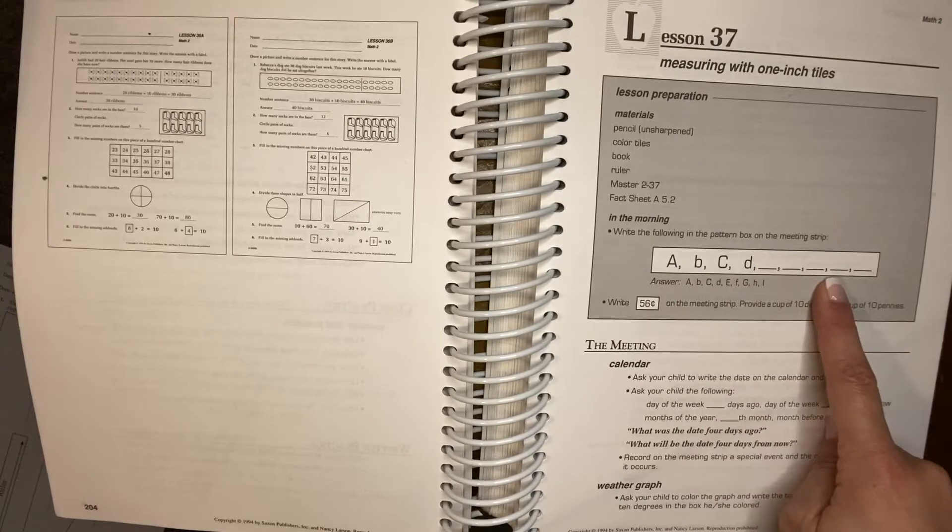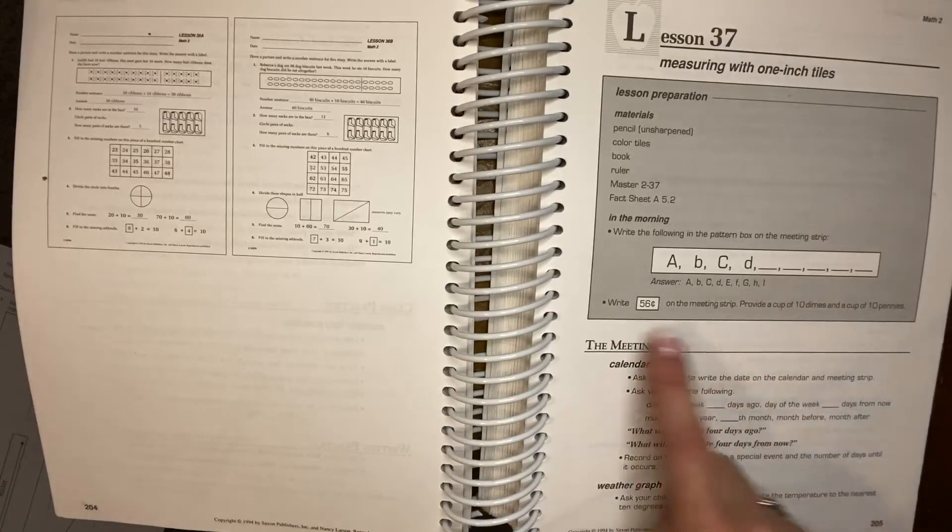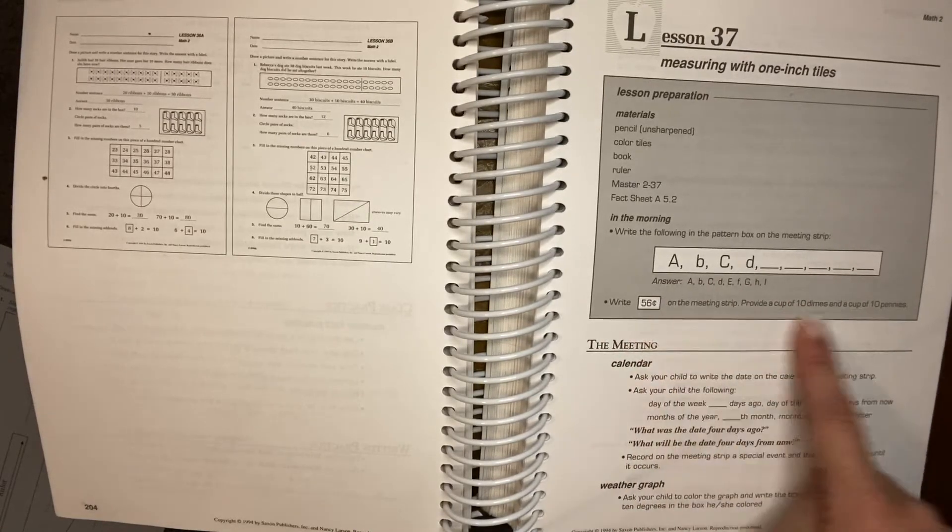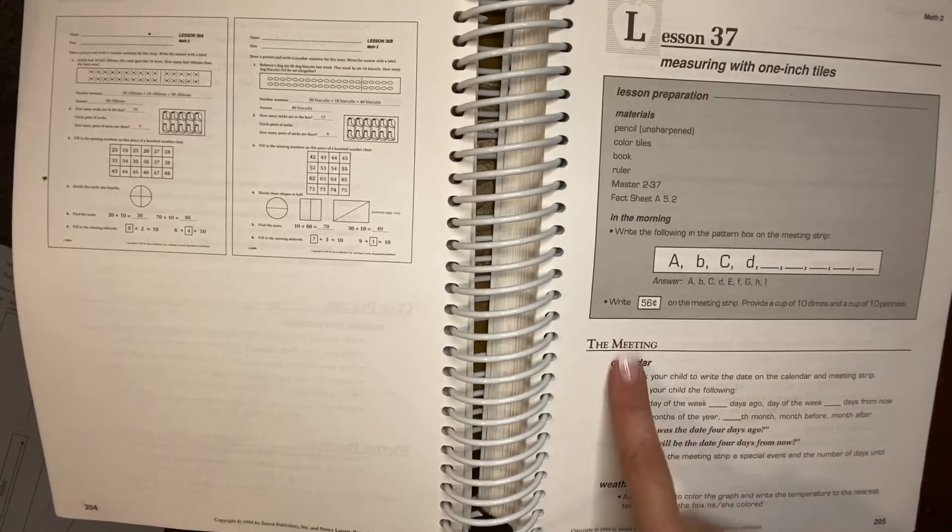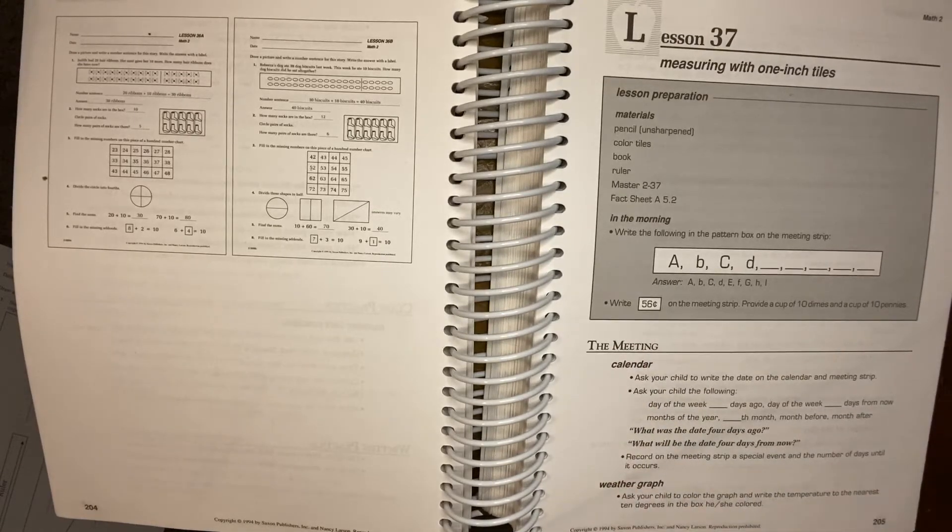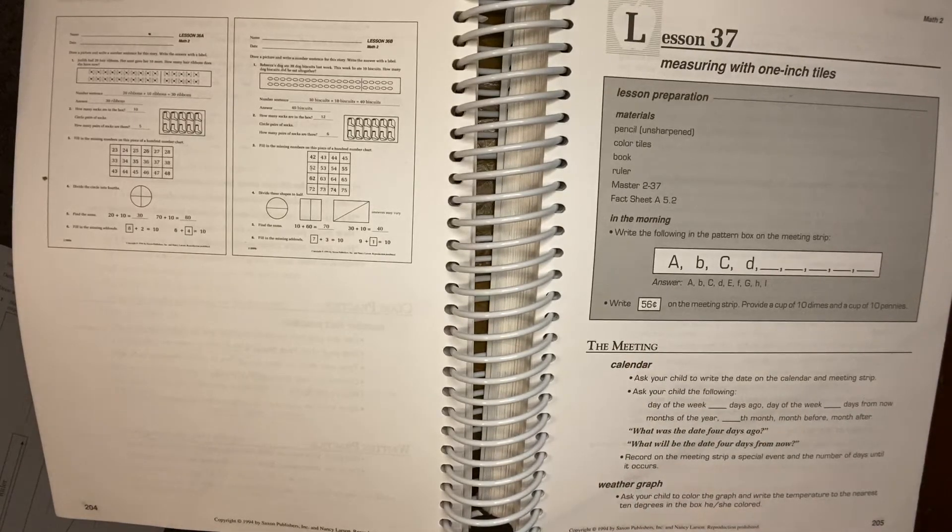So they always have a pattern and they have to finish the pattern. And then they sometimes have money. They have to count out the money. So the meeting part, we rarely do. Like I said, I will skim through it and see if it's something we need to go over.